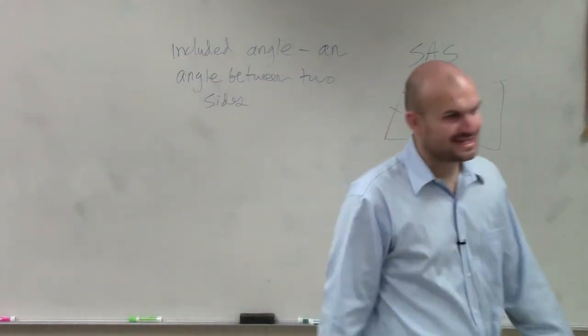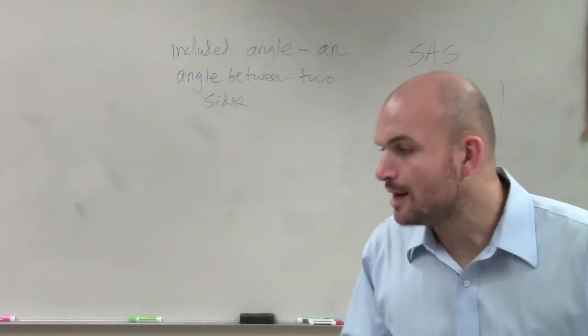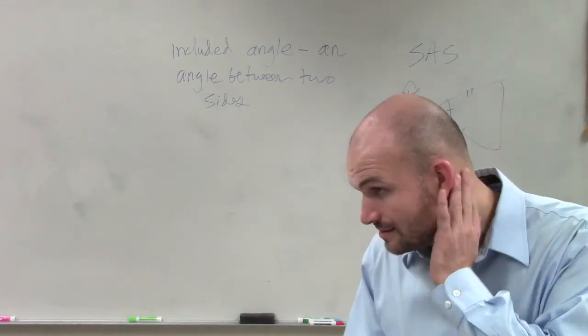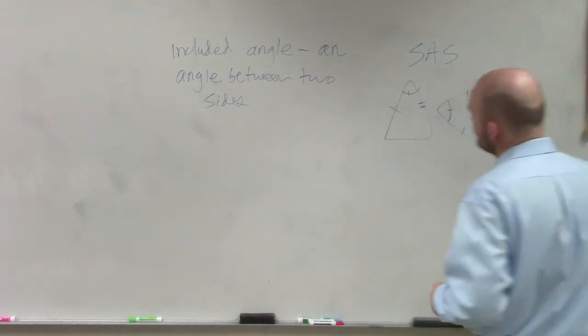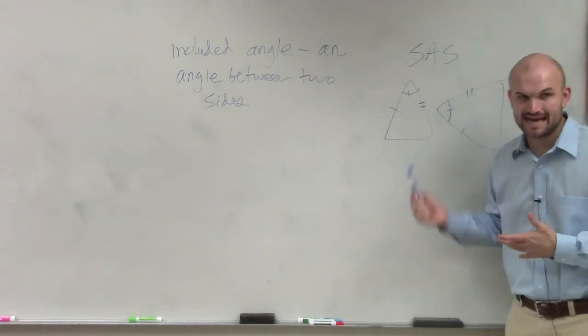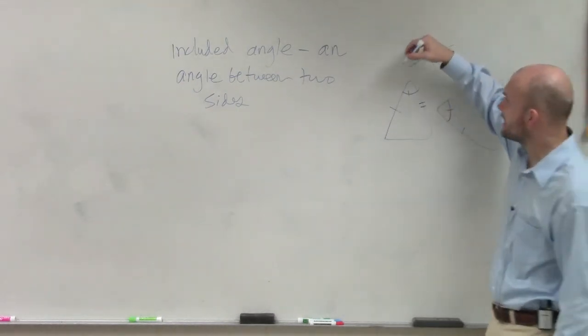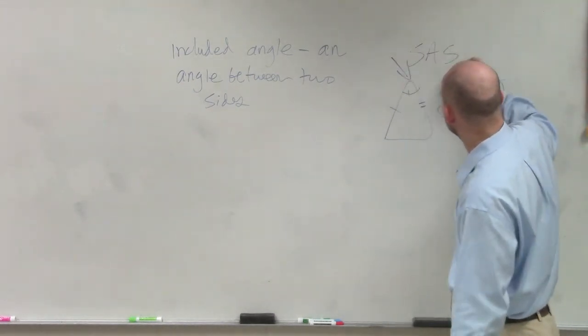We always talk about side, side, side congruence. But now if we have side, angle, side, what that tells us is we have side, angle, side. Here are two examples of included angles.